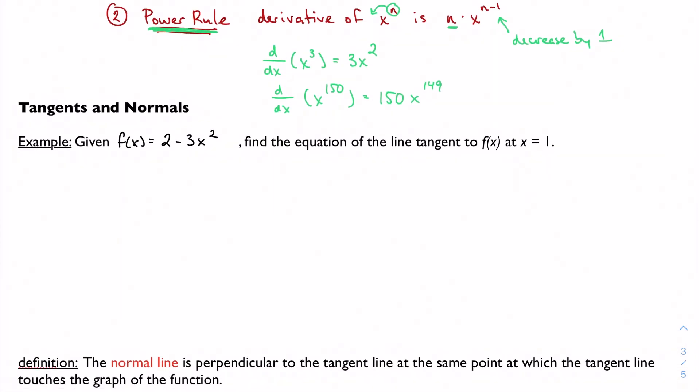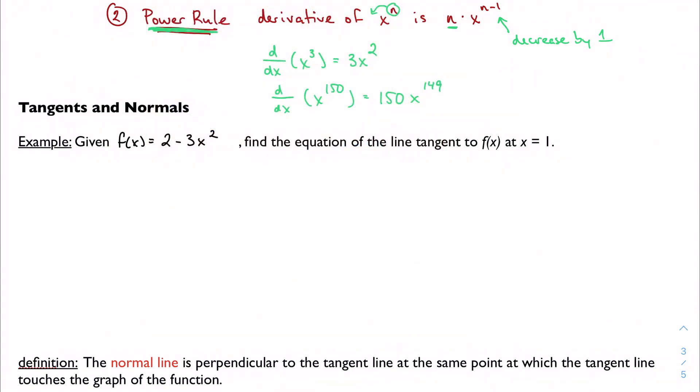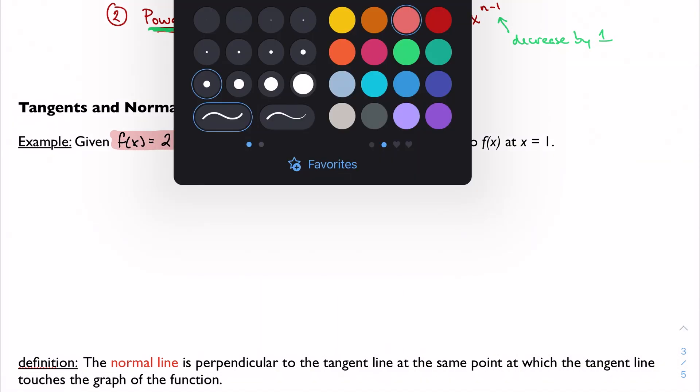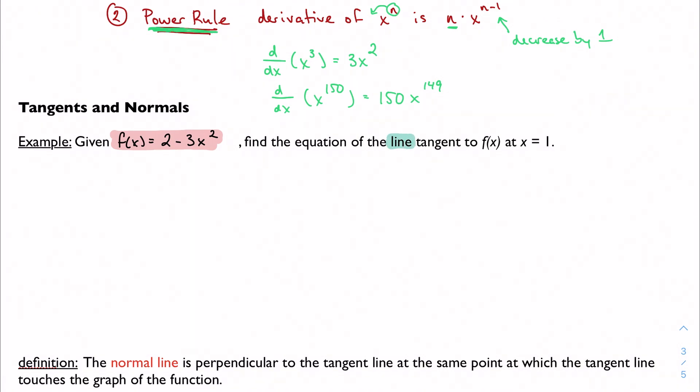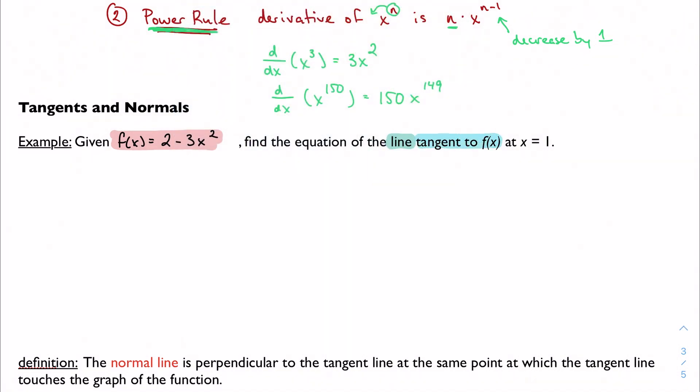One of the classic problems in calculus is to find the equation of the tangent line at a given point. So let's walk through that process. So given f of x equals 2 minus 3x squared, find the equation of the line tangent to f(x) at x equals 1. There's a lot going on here, so let's break down the problem. We're given a function. We want to find the line tangent to f(x) at x equals 1. Three important pieces of information.